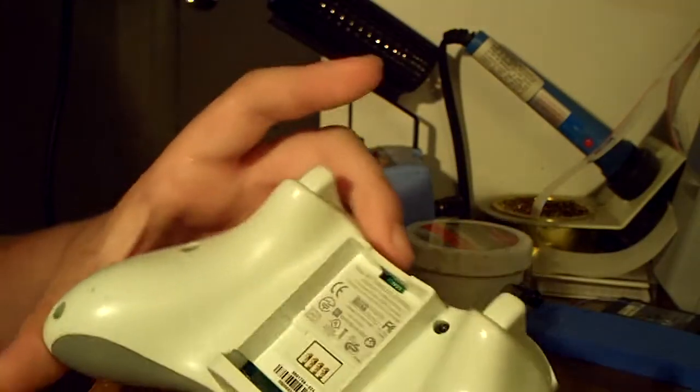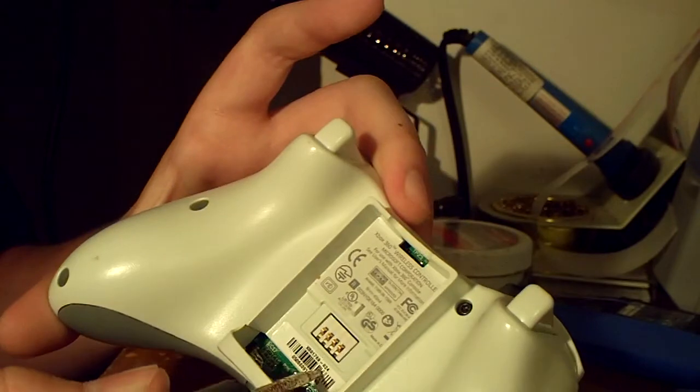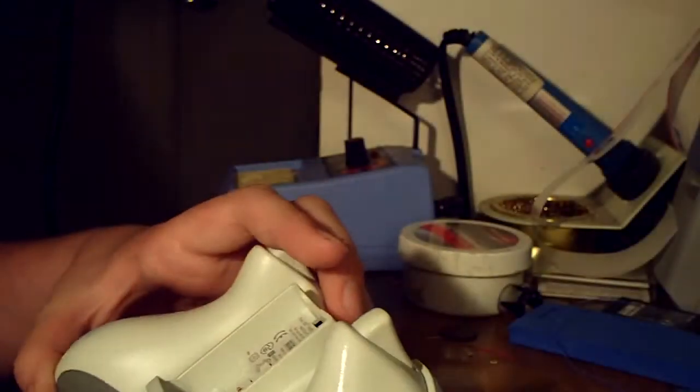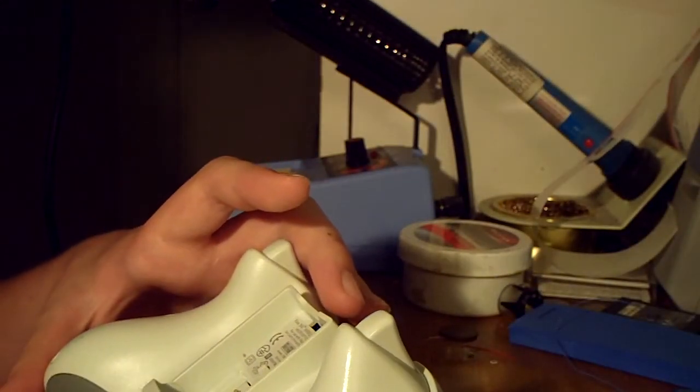So first, you gotta take off the battery cover and then under there, there's this barcode in the middle, down at the bottom. You can see that. What you're going to want to do, also you'll need tweezers,